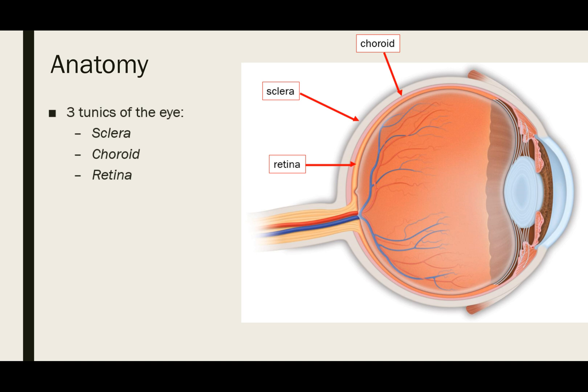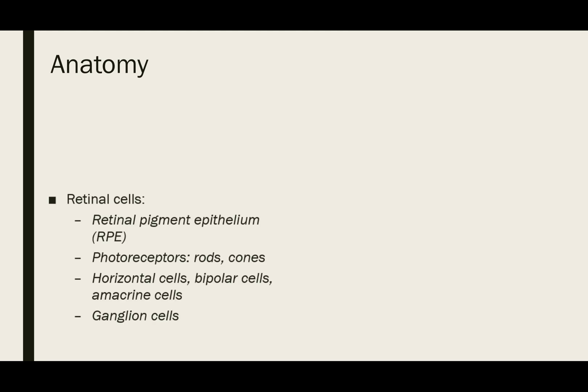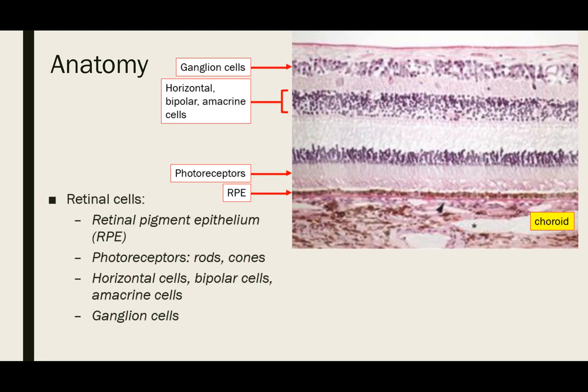In order to better understand the pathophysiology of this disease, let's review some anatomy of the eye. There are three tunics, or layers of the eye. Going from out to in, there is the sclera, the choroid, and the retina. The retina is a sensory membrane lining the inner surface of the back of the eye, responsible for converting light into chemical and nervous signals that are then sent to the brain via the optic nerve. The retina itself is composed of multiple layers. Immediately adjacent to the choroid layer is the retinal pigment epithelium, or RPE. Then we have the two types of photoreceptors: the rods and cones.